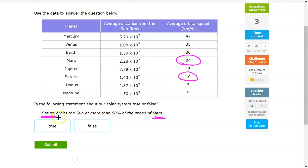Saturn orbits the sun at more than 50% of the speed of Mars. So 50% of 24 would bring you down to 12. So in order for Saturn to orbit the sun at more than 50%, its speed needs to be greater than that of 12.